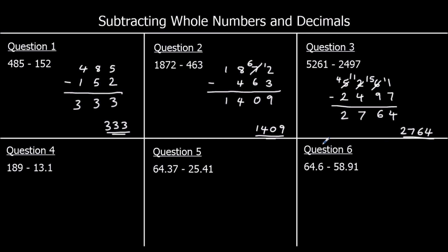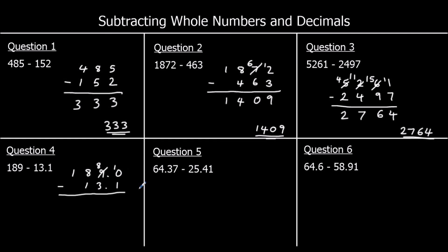Question 4: 189 take away 13.1. I'm lining up tens with tens, ones with ones, and tenths with tenths. 189 has got nothing in the tenths, so I'm going to add a 0 there. Starting with the smallest column, which is our tenths: 0 take away 1, I don't want to do that, so I'll steal one of the ones, and that's worth 10 in the tenths. 10 take away 1 is 9. The decimal point stays where it is. 8 take away 3 is 5 in the ones. The tens: 8 take away 1 is 7. And the hundreds: 1 take away nothing is 1. So we've got 175.9.